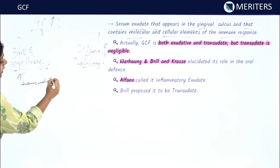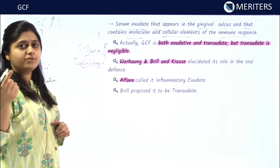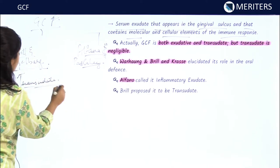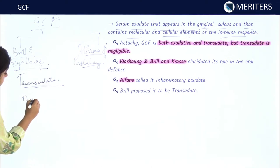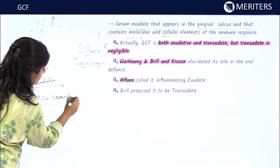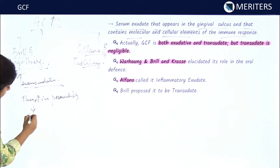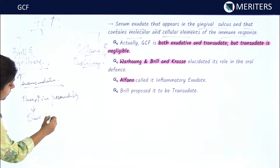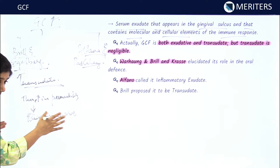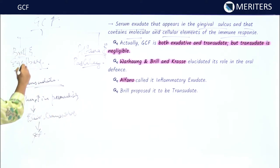A transudate is the leakage of fluid from the capillaries because of increase in the permeability of the capillaries. According to Brill and Eagleburg, when there is inflammation there is increase in permeability of capillaries, which leads to fluid transudate coming out of the capillaries, leading to GCF formation.